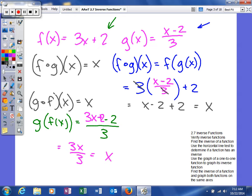As you can see, both f of g of x was equal to x, and g of f of x was equal to x. Because both are equal to x, you know that those two functions are inverses of each other.